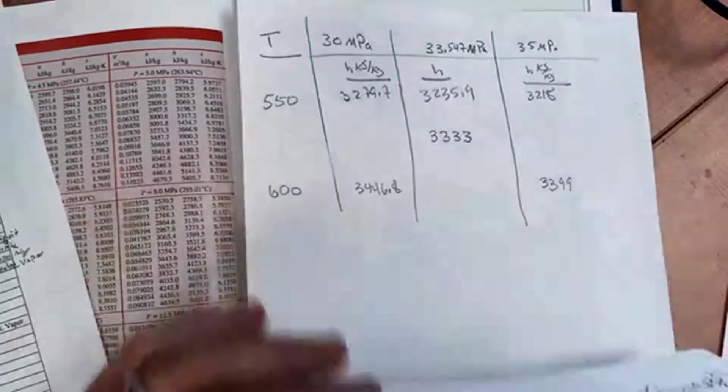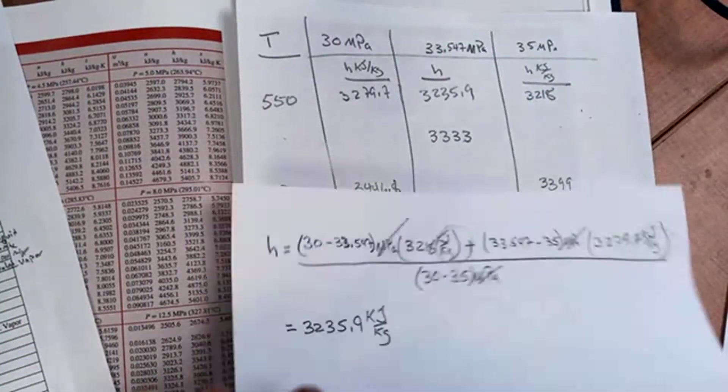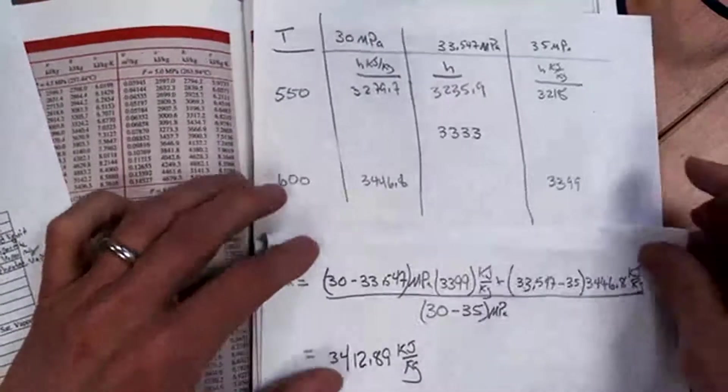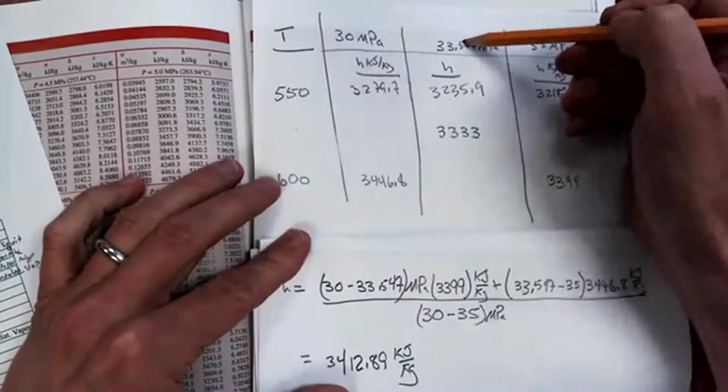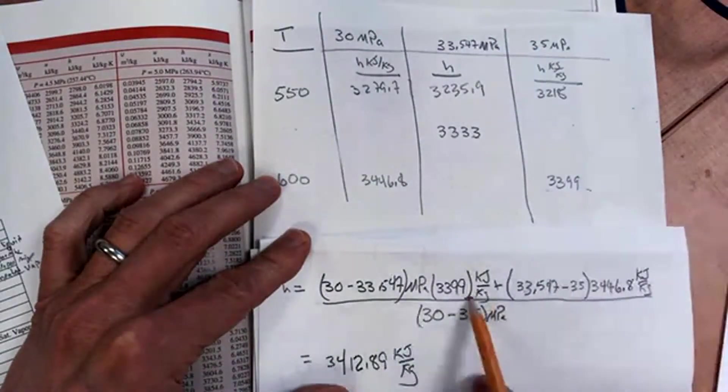Now I need this value here. So I've done that interpolation here. I set it up. I did something similar. 30 minus 33.547 times 3,399. So I got here.